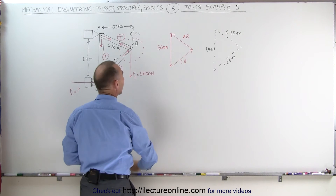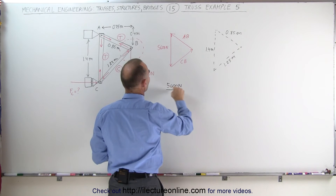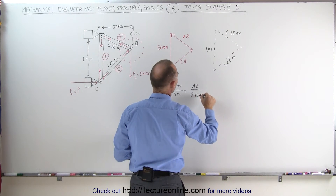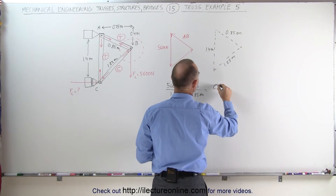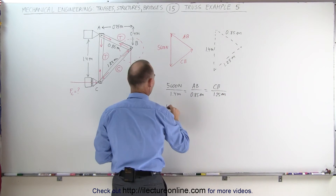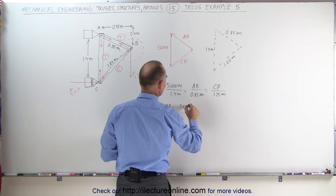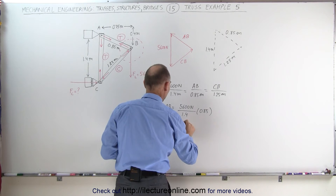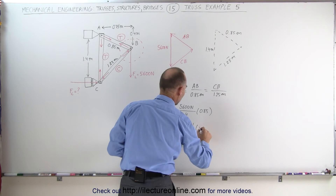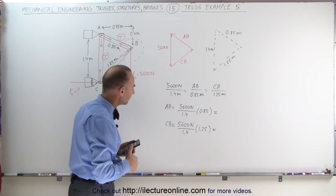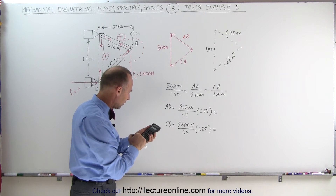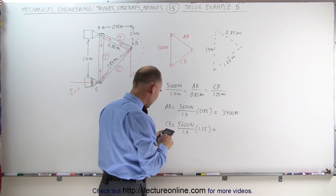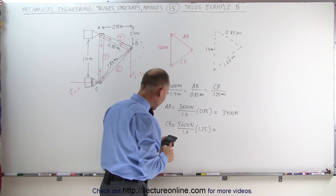We can therefore write: 5,600 newtons is associated with the length of 1.4 meters; that equals AB associated with the length of 0.85 meters; and CB associated with 1.25 meters. Which means the magnitude of force on AB equals 5,600 newtons divided by 1.4, multiplied by 0.85 — that gives 3,400 newtons. And the magnitude of force on CB equals 5,600 newtons divided by 1.4, multiplied by 1.25 — that gives 5,000 newtons.